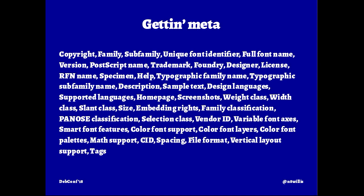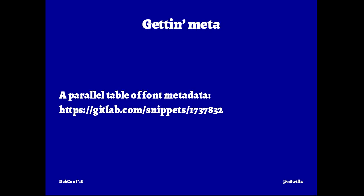When I say metadata, here's a dump out of a table I made trying to track what different applications store — everything from copyrights and trademark notices, to what language the font is designed for, weight class, Panose, vendor ID, URLs for the designer and foundry, whether it's a color font and how many layers, whether it's for vertical layout, and — pretty important — user tags. What's missing is a desktop-wide or per-user cache of the metadata. I put this table on a snippet on GitLab — it's Markdown rendered into HTML, which makes it kind of ugly, but it's a start.